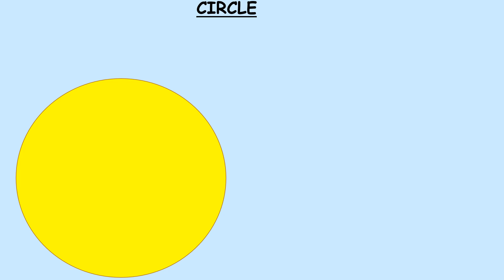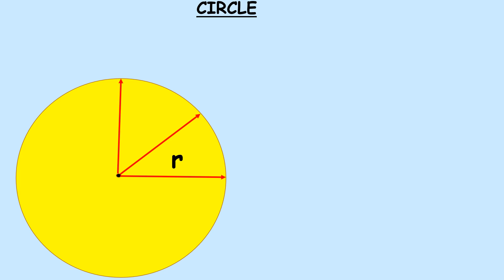We will be looking at this circle. We have the centre of the circle as clearly indicated by this black dot. We earlier mentioned that all points from the circumference are at equal distance from the centre of the circle, as we are showing. That distance from the centre to the circumference is equivalent to the radius. So at any point in time, all points on the circumference are at equal distance from the centre.